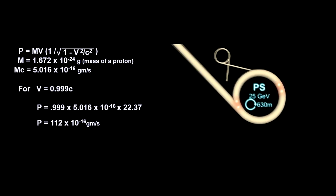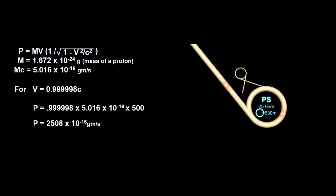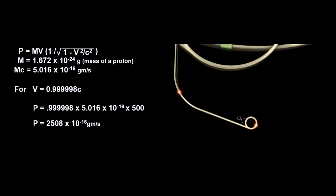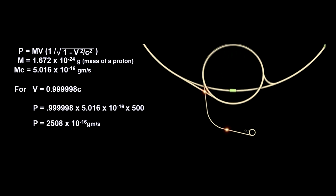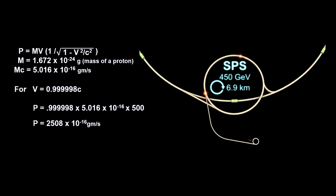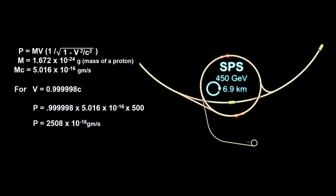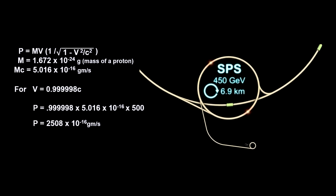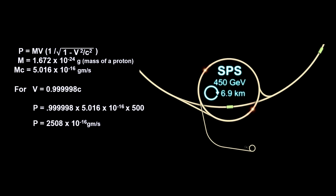The protons are then channeled into the super proton synchrotron. This is a huge ring almost 7 kilometers in circumference. The best that it can do is to increase the velocity of the protons by around 8% to 99.9998% of the speed of light. The protons' momentum has now jumped by over 1,400 times its momentum at the end of the first acceleration.